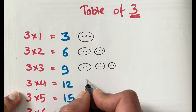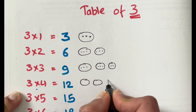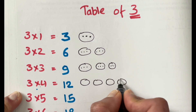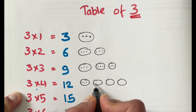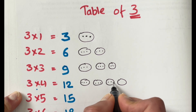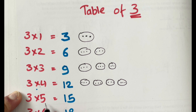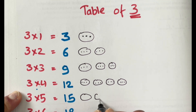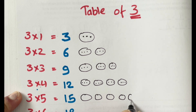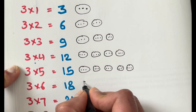Three times four is twelve, that means there are four groups of three. One, two, three — one, two, three — third group and the fourth group. Three times five is fifteen, that means five groups of three.